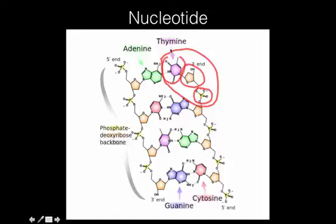And there are four nitrogen bases: thymine, adenine, guanine, and cytosine, or sometimes you'll hear them as A, C, G, and T. We use the first letter.